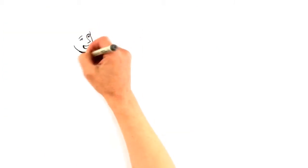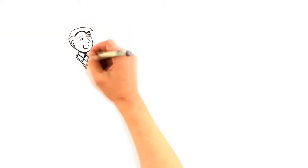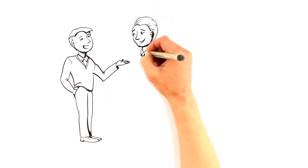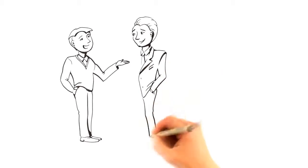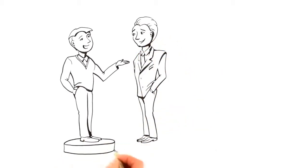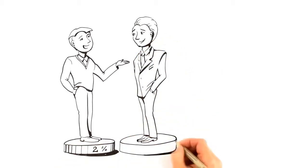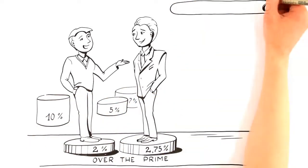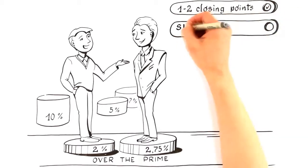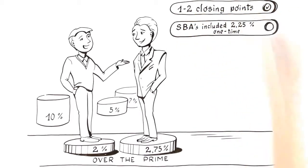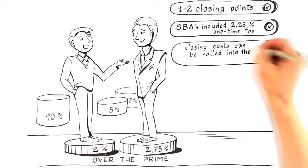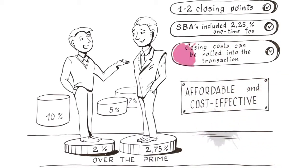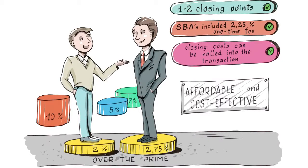You can be approved for SBA-secured programs and obtain low rates typically ranging from 2% to 2.75% over the prime interest rate. These are some of the lowest interest charges of all business financing options, and you will only need to pay 1% to 2% closing points along with SBA's included 2.25% one-time fee for SBA 7A loans. Any and all closing costs with SBA loans can be rolled into the transaction, ensuring it's affordable and cost-effective for you to secure your new loan.